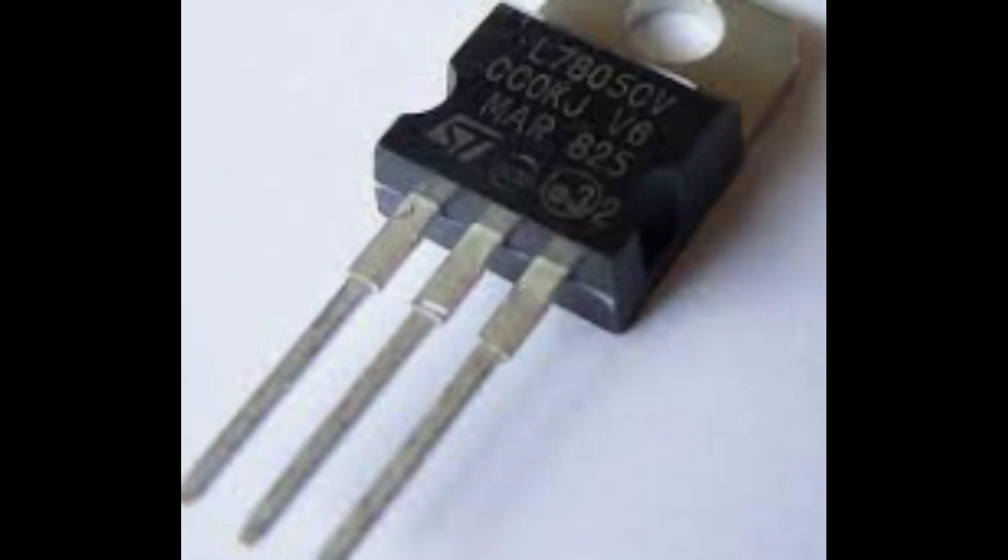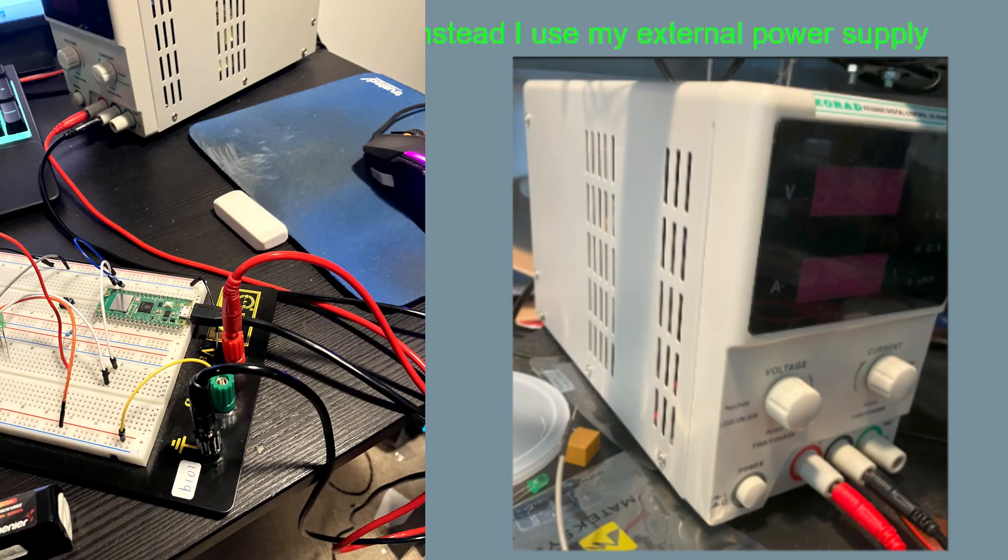Using a regulator to step down the voltage would have been too complicated so instead I chose to use a second battery which is a 2S.